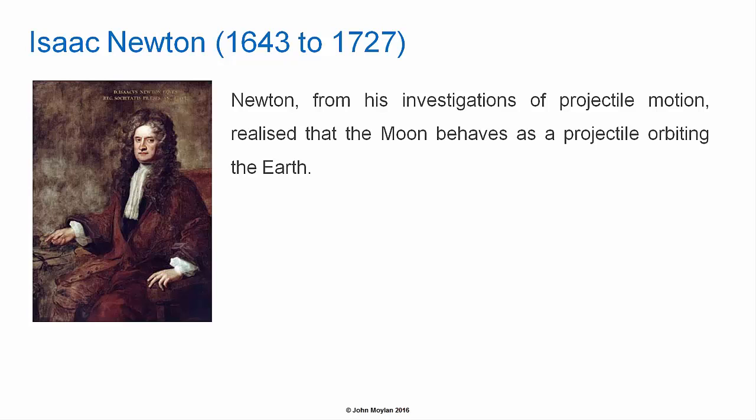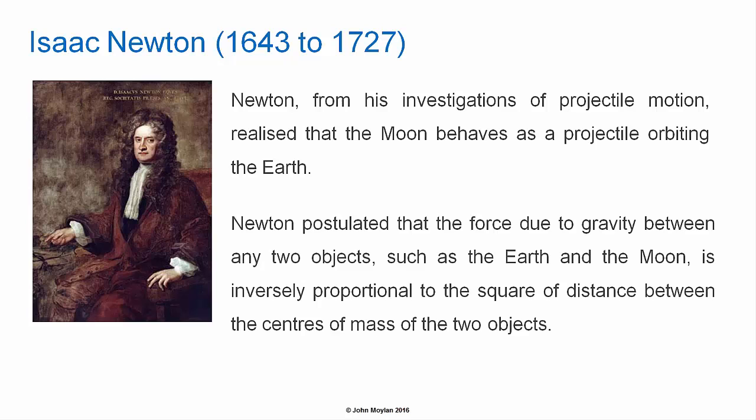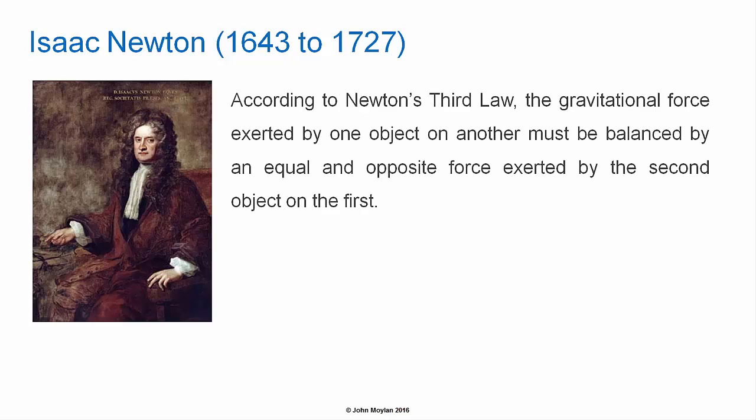Isaac Newton lived between 1643 and 1727. Newton, from his investigations of projectile motion, realised that the moon behaves as a projectile orbiting the Earth. Newton postulated that the force due to gravity between any two objects, such as the Earth and the moon, is inversely proportional to the square of the distance between their centres of mass.